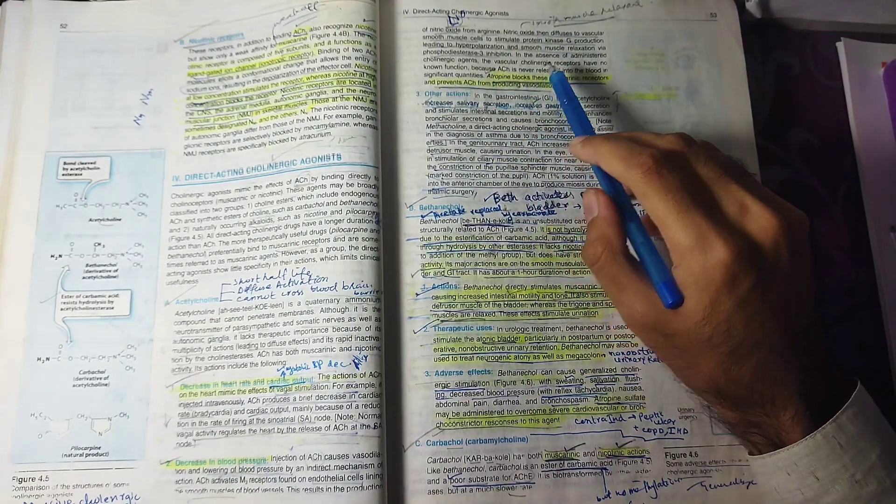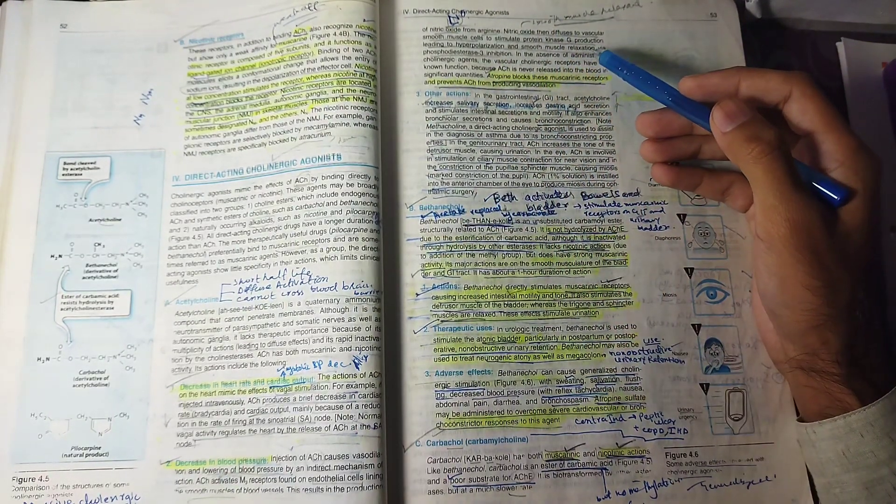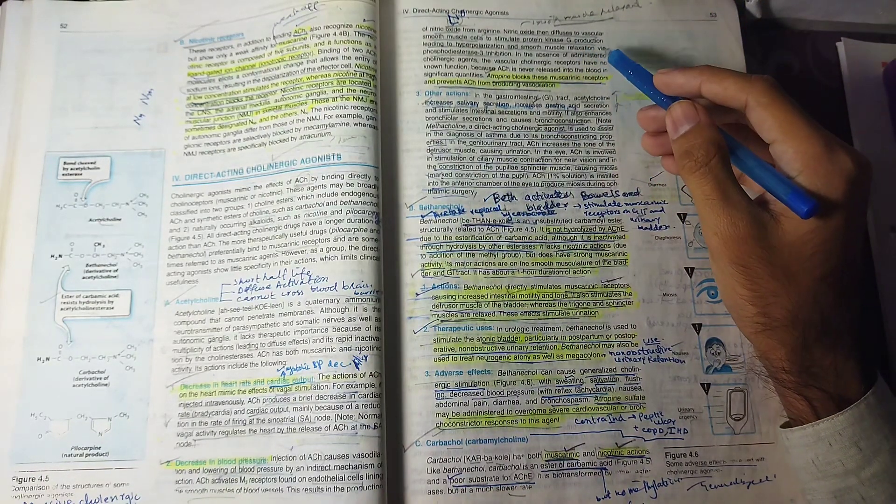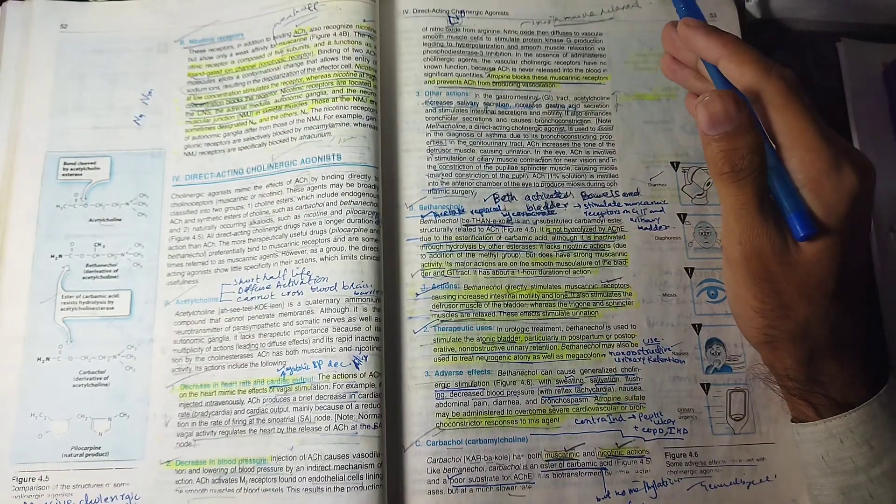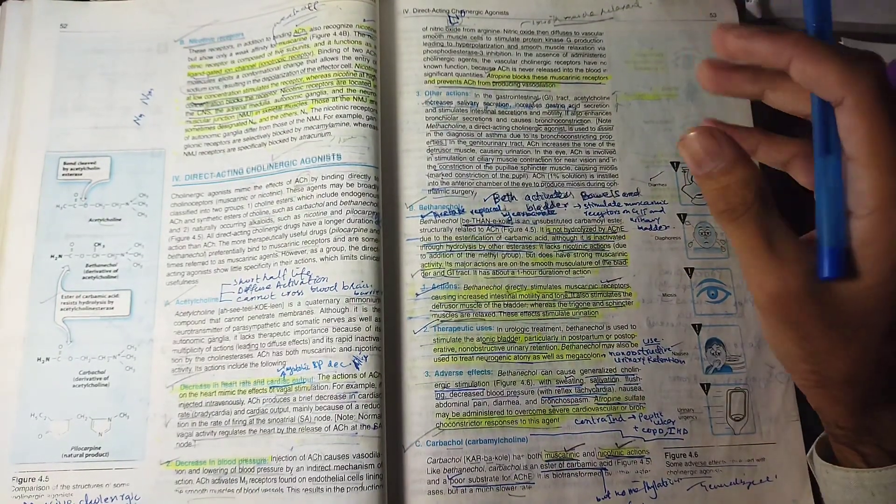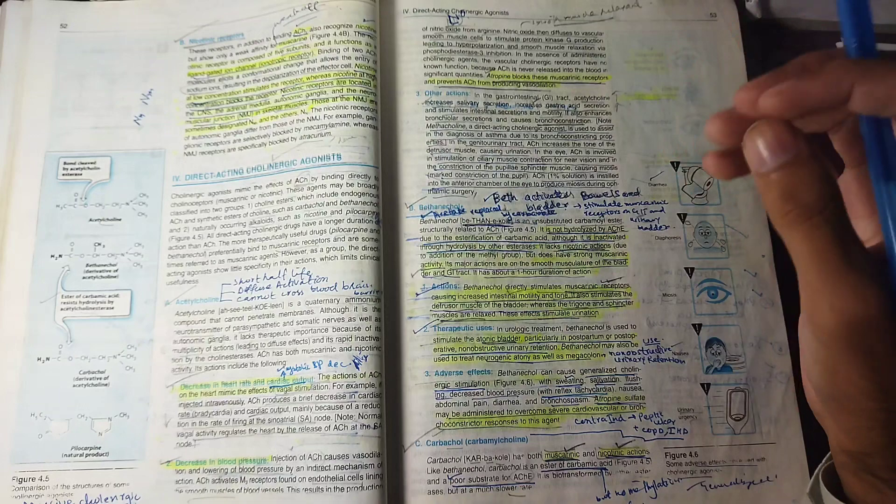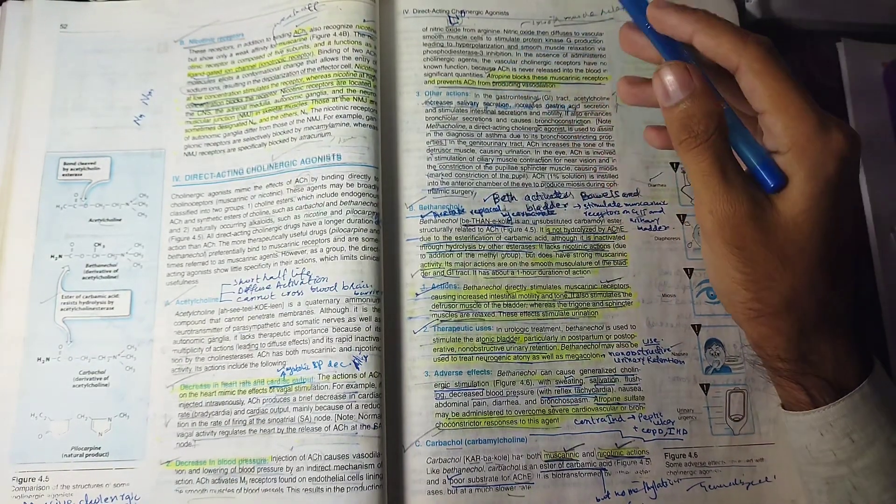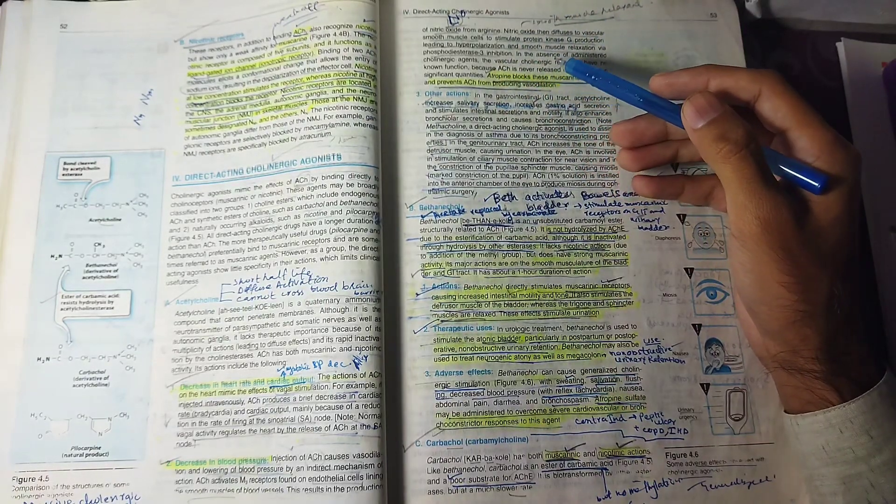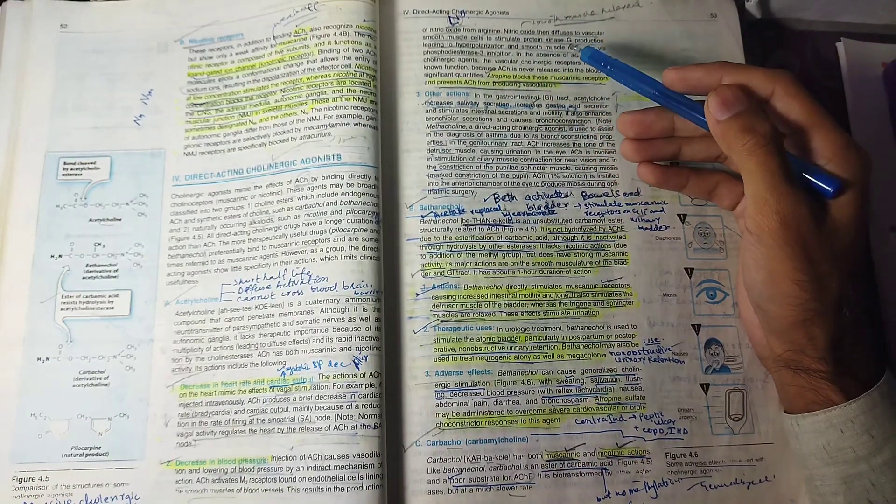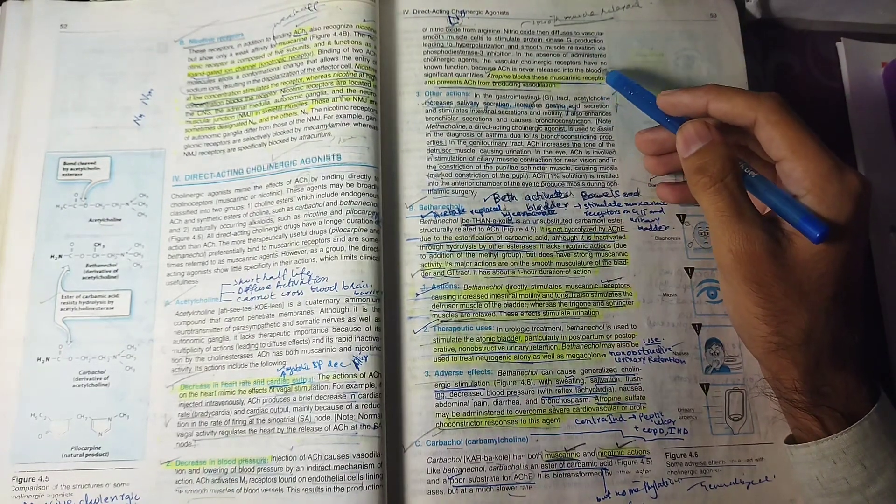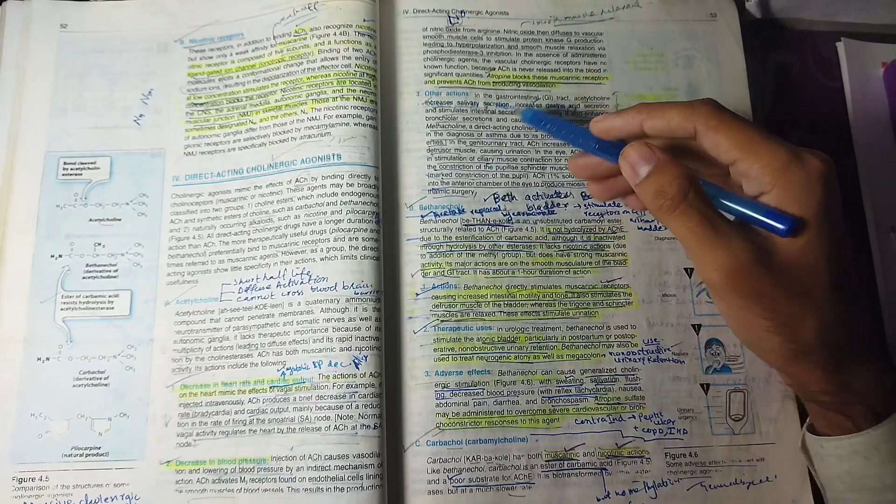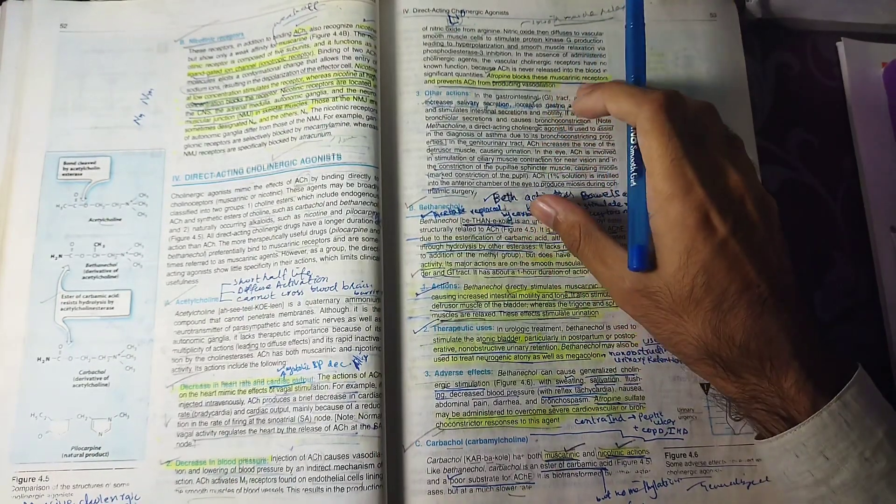This is what we've talked about. Now, there are many M3 receptors on the endothelium because there are no presynaptic nerve endings on the endothelium, so acetylcholine comes from outside. Atropine is basically a muscarinic receptor antagonist and it will block acetylcholine.